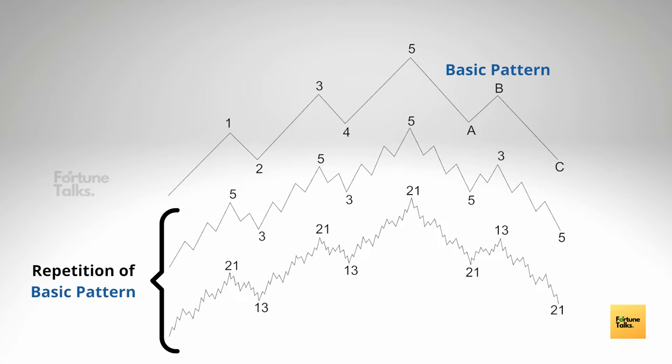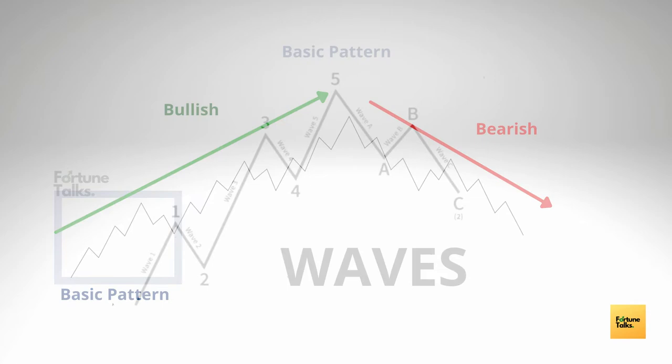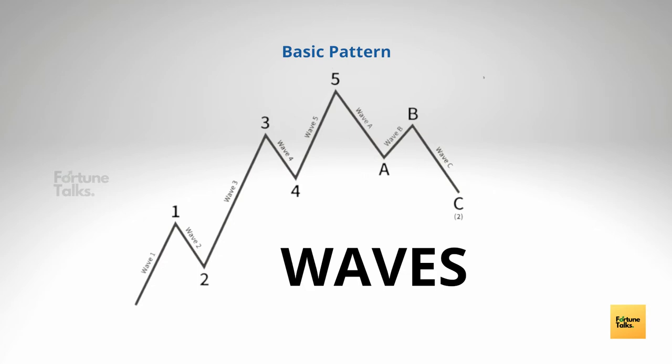Let us understand what exactly is Elliott Wave theory. The Elliott Wave theory suggests that stock prices move continuously up and down in the same pattern. The patterns are formed according to the ongoing market sentiment, which alternates between bullish and bearish cycles.